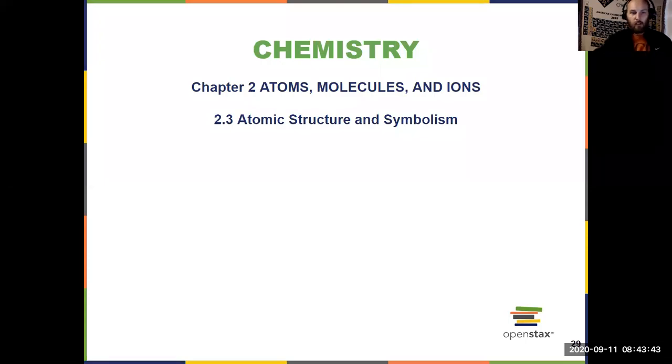In this video, we're going to talk about Chapter 2, Section 2.3, Atomic Structure and Symbolism, which is probably the largest section in Chapter 2. We've got really some key ideas in this section in regard to understanding the periodic table and the information that provides us about individual elements. So let's dive into it.